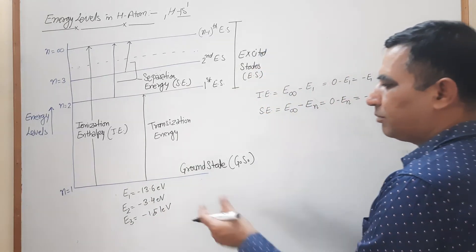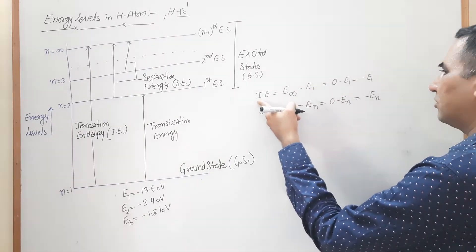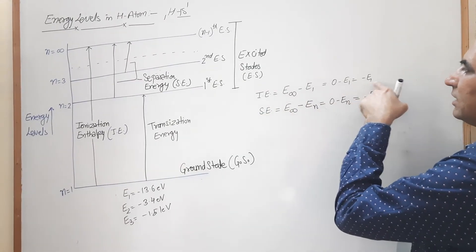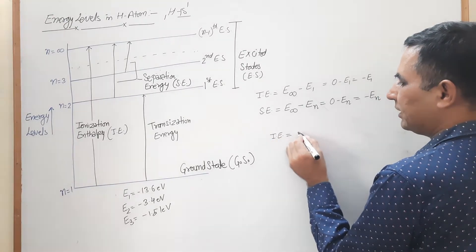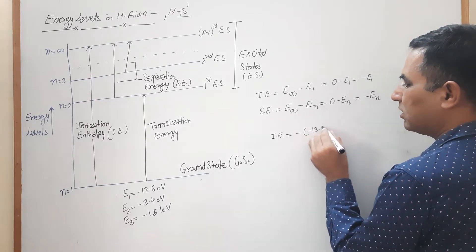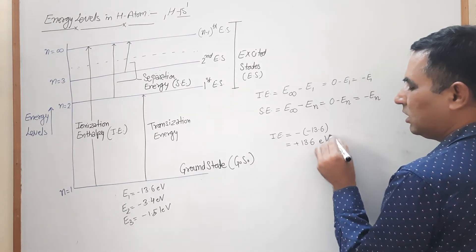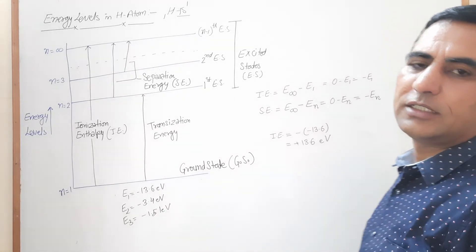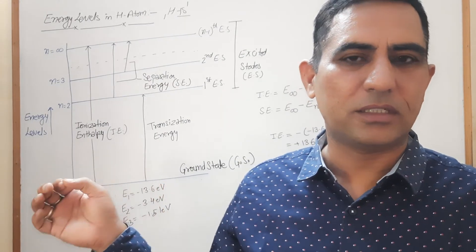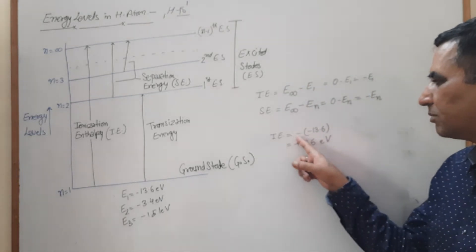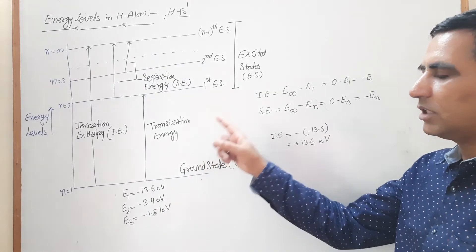Let us do some numerical problems. First, ionization enthalpy: the formula is minus E1. The energy of the electron in the first orbit is minus 13.6 eV, so the two negatives cancel and ionization enthalpy equals plus 13.6 eV. This is the minimum energy required to separate the electron from the ground state of hydrogen.